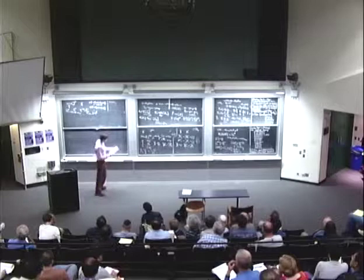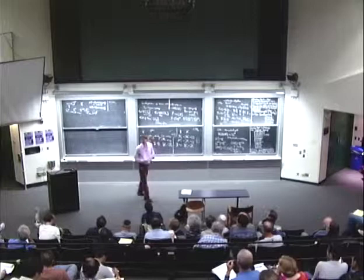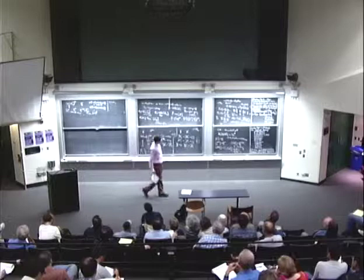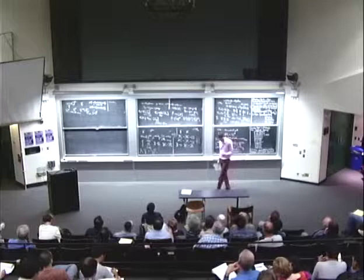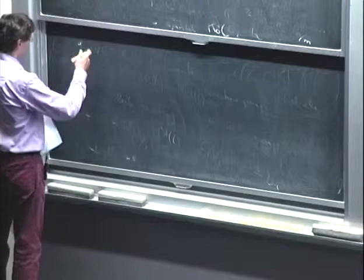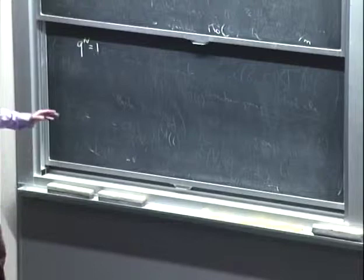Most of the literature on categorification deals with examples at generic q — we're categorifying structures for generic q. The big mystery is what happens when q is a root of unity, meaning q^n = 1. There's not much work here, so I'll tell you about what's known.